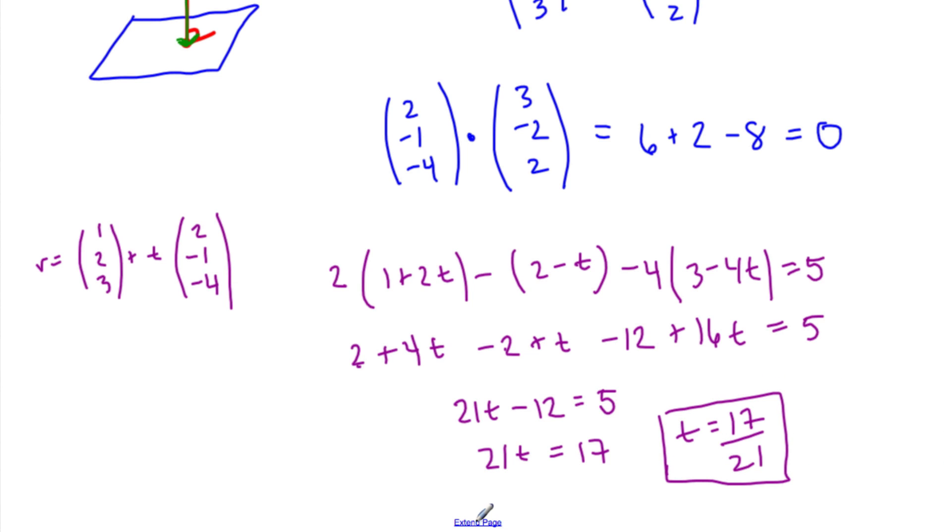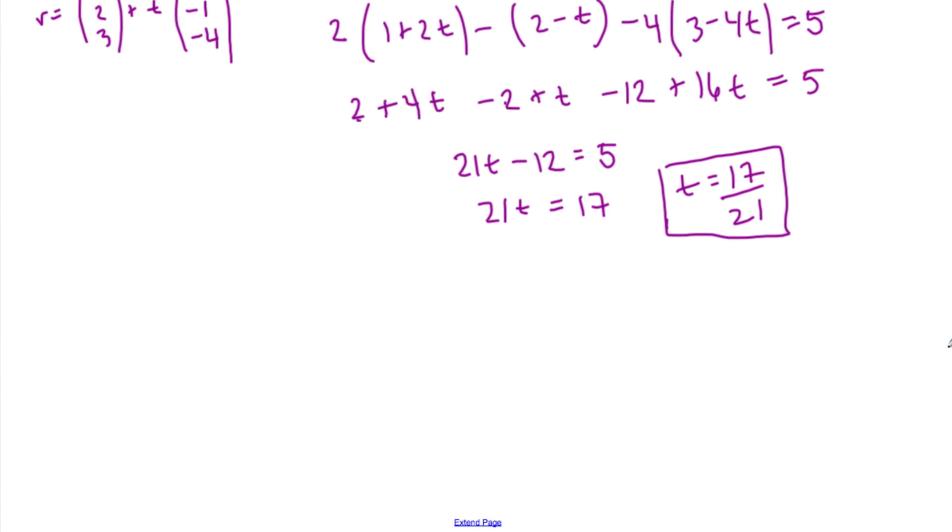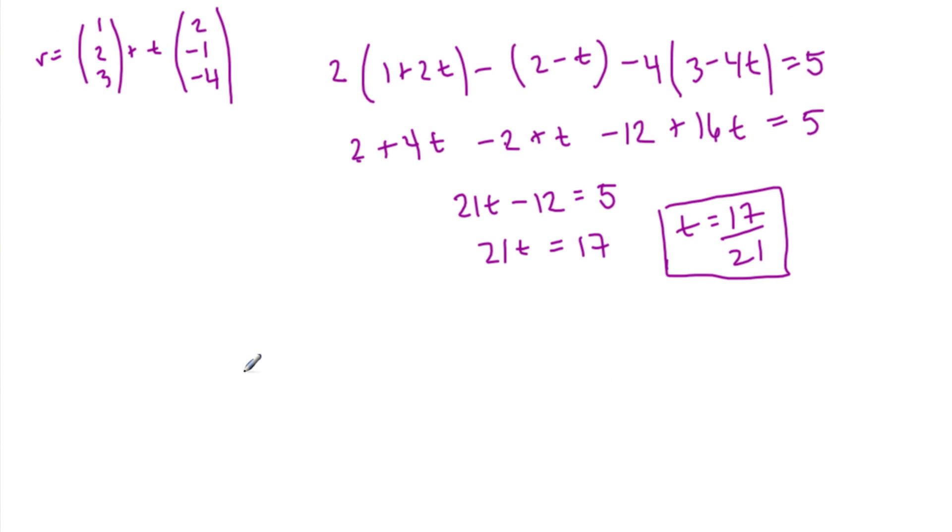Okay, that's when it happens, so now I just need to find the magnitude of this vector here, times t. So the magnitude of seventeen over twenty-one, times the vector of two minus one minus four. That will be our minimum distance.